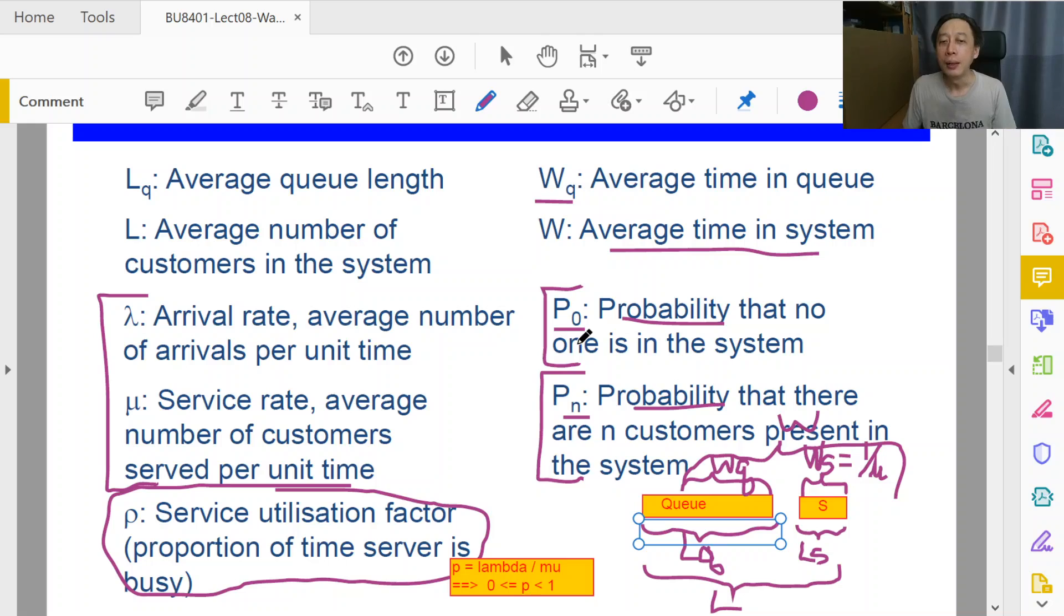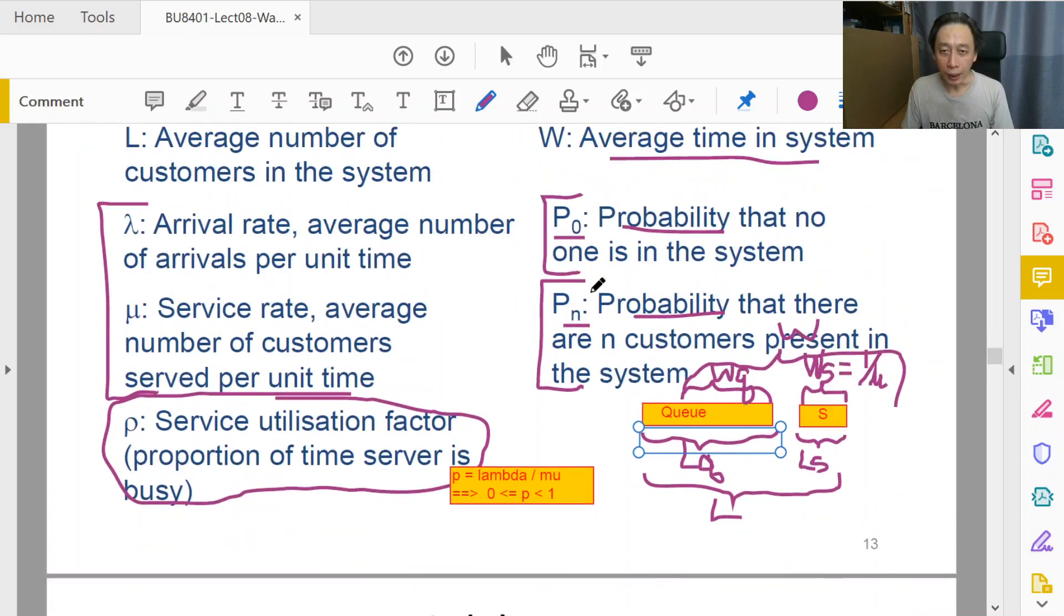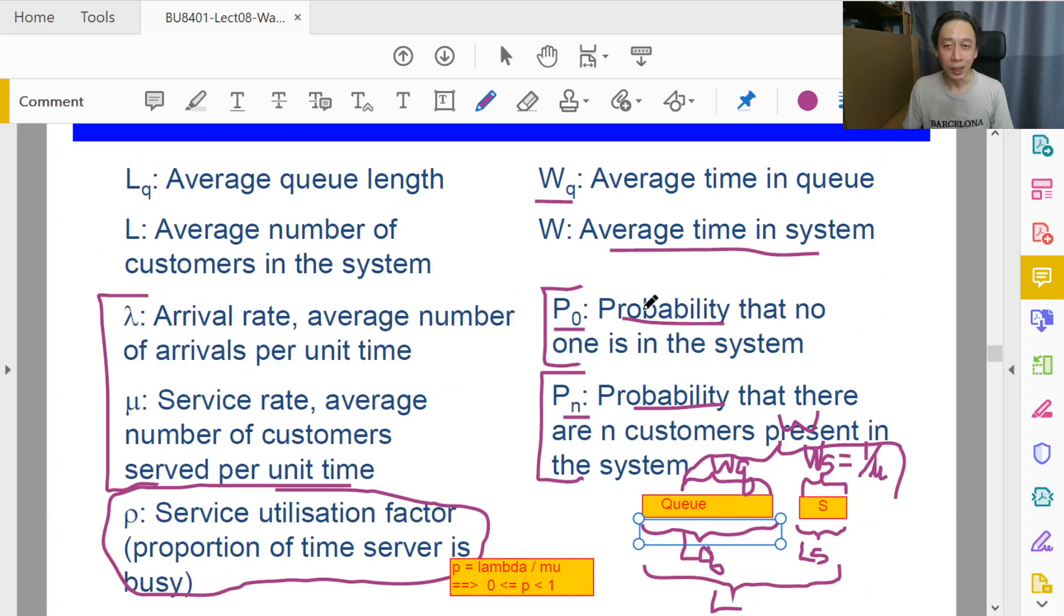So that's just a brief discussion of the outputs given by the queue system theory. And next section we'll look at Little's law that plays a big part in guiding our thinking and the calculations in our formulas.